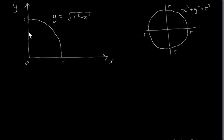To get the volume of a sphere, we look at a quarter circle. The equation of a circle centered at the origin, as you've seen in a previous video, is X squared plus Y squared equals R squared, where R is the radius of the circle. So it's centered at 0, 0.